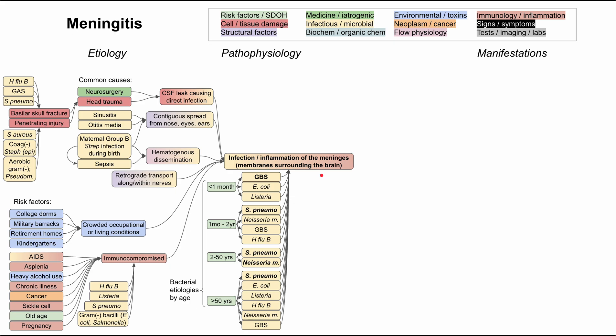We've been focusing on bacterial meningitis, but there are other causes. Viruses can cause meningitis, usually with a more mild picture but still serious. The most common are enteroviruses — Coxsackie virus or echo virus. Herpes viruses can also cause it: HSV-1, HSV-2, and varicella zoster virus. Mumps, measles, influenza, and West Nile virus can also cause meningitis. Viral meningitis is usually concurrent with viral encephalitis, creating a meningoencephalitis picture.